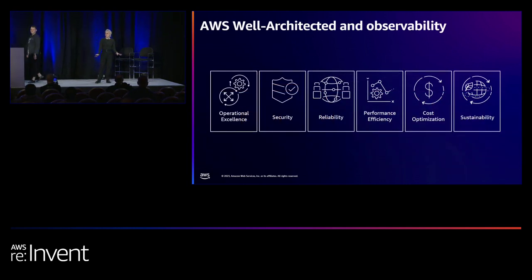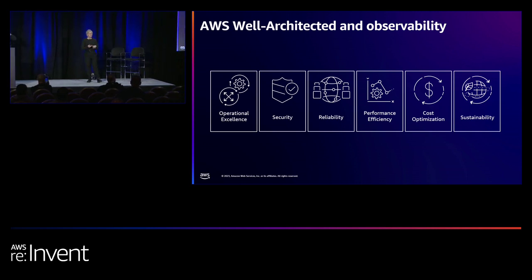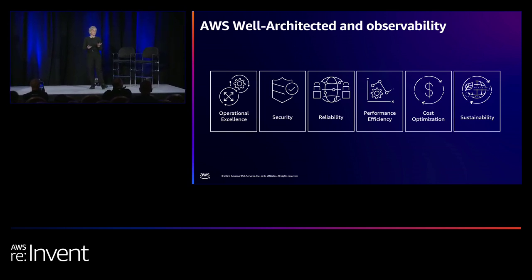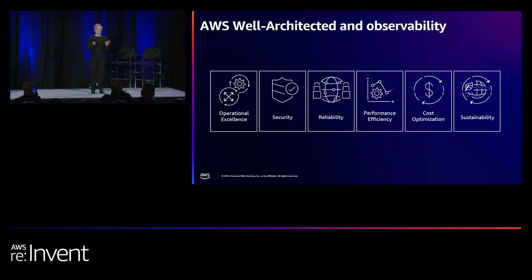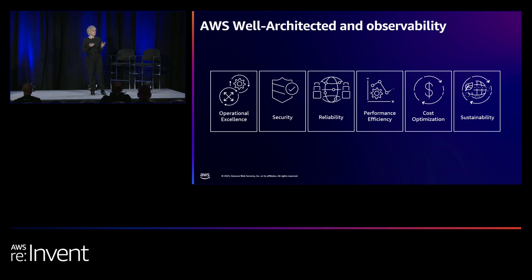Just to put things in the framework of what Dynatrace does and how it maps to AWS best practices — looking at the AWS well-architected observability pillars, what does it mean to have a good application running on AWS? It has to work, it has to be functional, it has to have security, it has to be reliable, it has to have performance, it has to be sustainable, and it has to work from a cost optimization strategy.